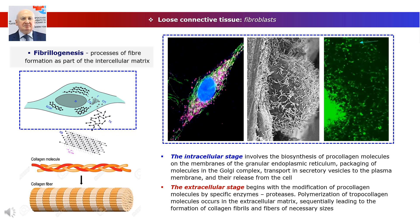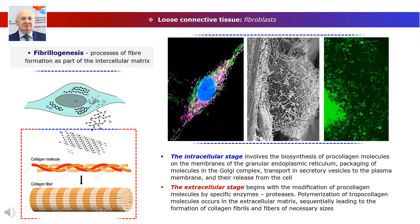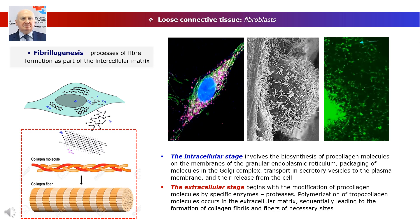The extracellular stage begins with the modification of procollagen molecules by specific proteases, leading to the formation of insoluble tropocollagen capable of self-assembly into fibrillar structures. Polymerization of tropocollagen molecules occurs in the extracellular matrix sequentially, leading to the formation of collagen fibrils and fibers of necessary sizes.